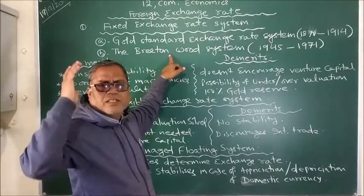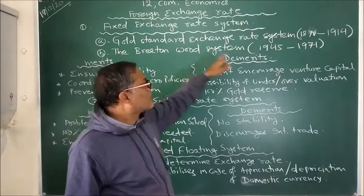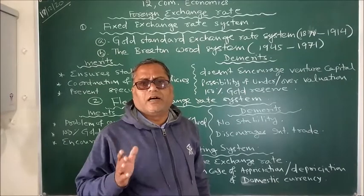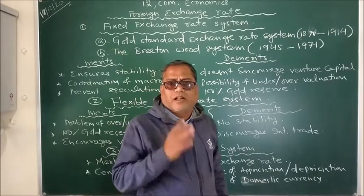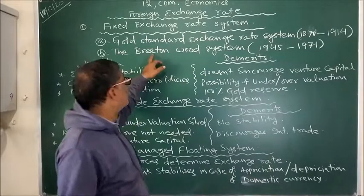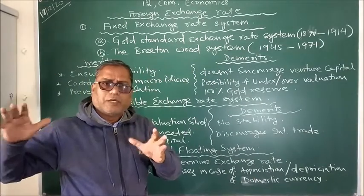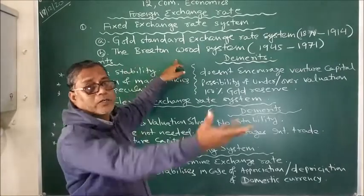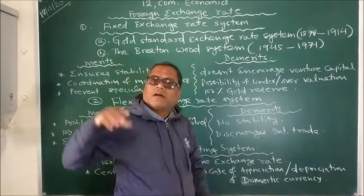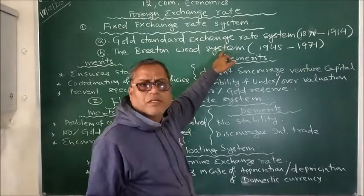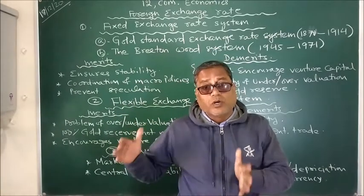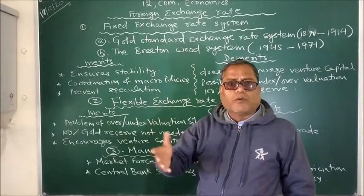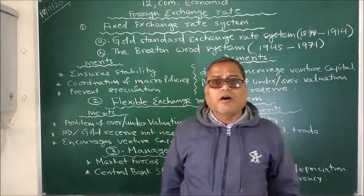Now coming to the Bretton Woods system. This is rather a political affair. Between 1945 to 1971, the USA was playing a very dominant role in the world, and naturally the US dollar was dominant all over the world. According to this system, all the currencies of different countries were related to the US dollar, and ultimately could be converted into gold. So indirectly, via the US dollar, the currency of any country could be converted into gold. In both systems, the government had to keep 100% gold reserve, which was the real difficulty to maintain.